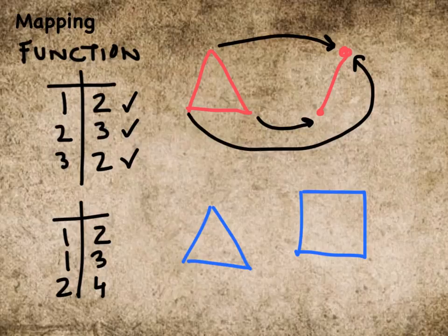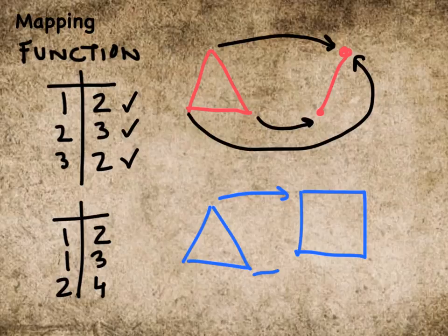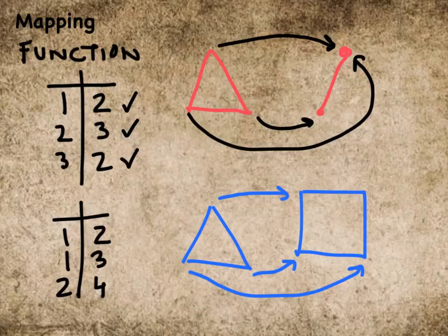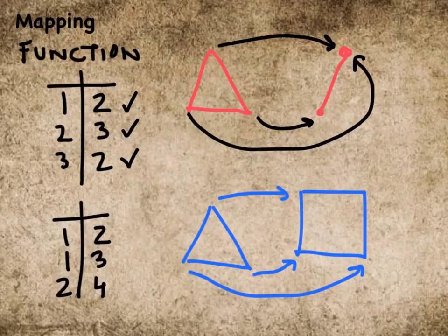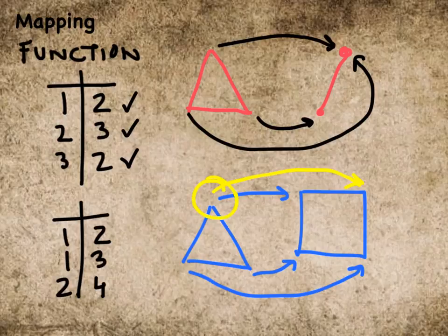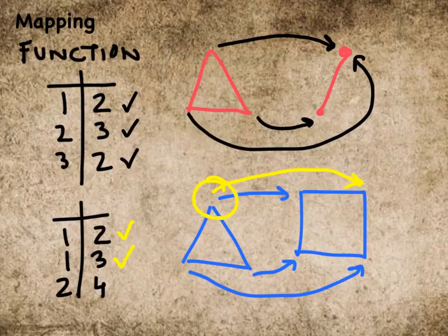This vertex gets assigned here, this vertex gets assigned here, this vertex gets assigned here. Now watch, the last one is going to cause us a little bit of trouble here. It is going to be assigned a second location. Do you see how this one got doubly assigned? That's like this happening and this happening. So this last is not a mapping.